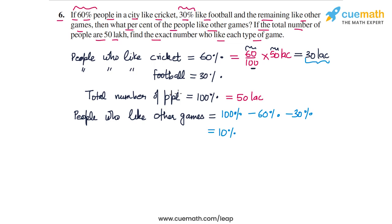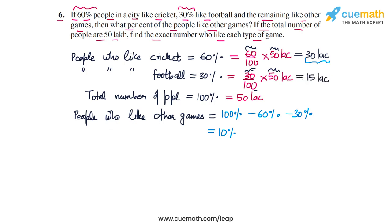30 lakh people like cricket. Similarly, football is liked by 30% of people, so 30% of 50 lakh is 30/100 times 50 lakh. 30 times 50 is 1500, and 1500 divided by 100 is 15. So this equals 15 lakh.